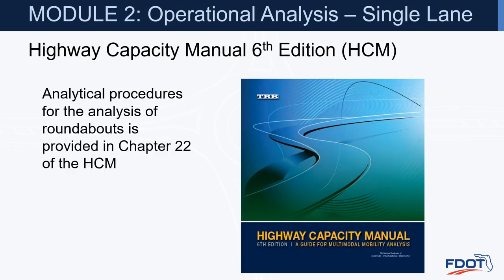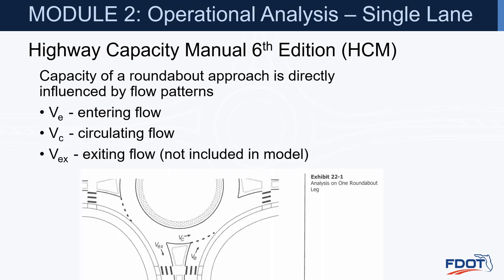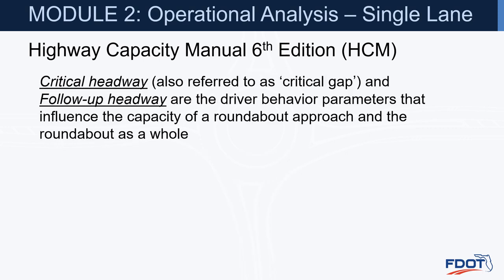Highway Capacity Manual Sixth Edition, or HCM. The analytical procedures for the analysis of roundabouts are provided in Chapter 22 of the HCM. Capacity of a roundabout approach is directly influenced by flow patterns, including vehicles entering, circulating, and exiting the roundabout. At this point in time, the HCM equations do not include the number of vehicles exiting from the roundabout.